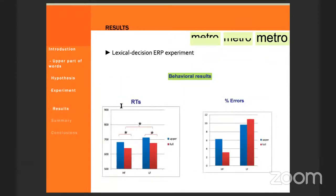For the behavioral results, there was a main effect of each of the factors that were included, frequency and degradation. So fastest reaction latencies for the high frequency words compared to low frequency words, and fastest latencies for the full compared to the upper part of words. There was no interaction between these two factors.